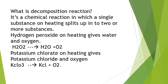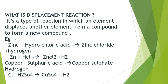The third reaction is displacement reaction. It is a type of reaction in which an element displaces another element from a compound to form a new compound. Example: zinc plus hydrochloric acid — zinc is a metal; when it reacts with hydrochloric acid, it displaces hydrogen from hydrochloric acid and occupies its place to form zinc chloride. So Zn plus HCl gives ZnCl₂ and hydrogen is displaced.